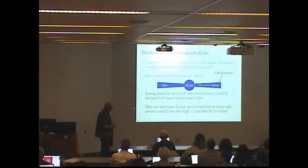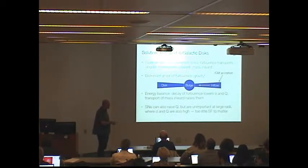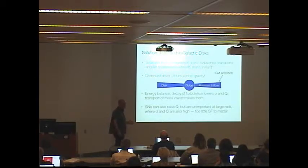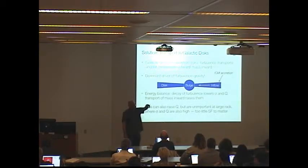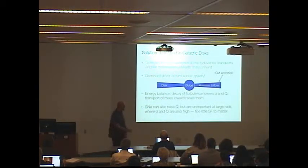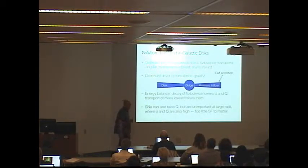You can also have star formation feedback that can raise your Toomre Q, but that can't be that important at large galactocentric radii just because there's so little star formation out there. If I go out to 2R25, where there's tons of HI, I have tiny little dinky supernova remnants scattered in this vast disk. So it can't be the supernovae that are dominating out there — it's really gravity that's running the show.